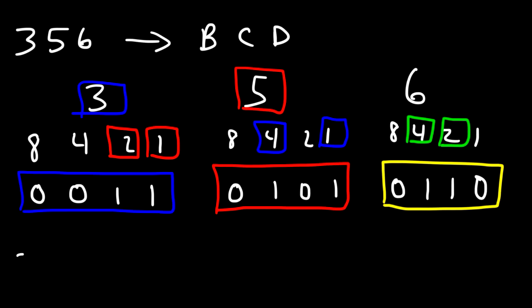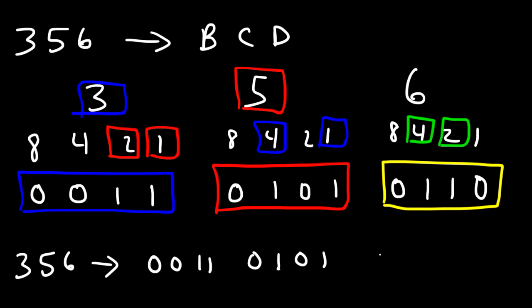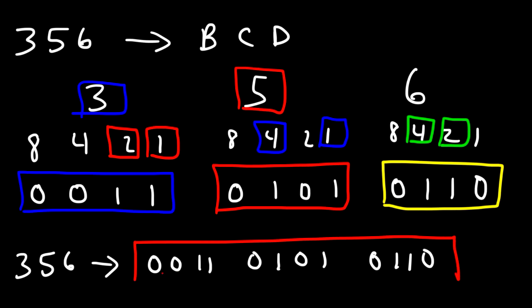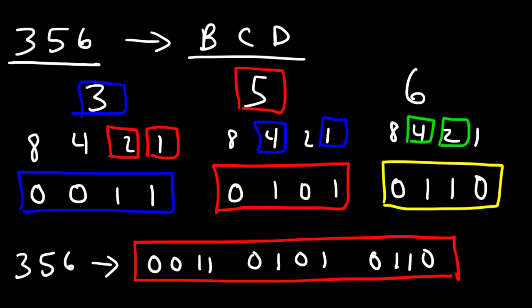And so we could say 356 corresponds to the binary coded decimal 0011 0101 0110. And so this is the answer for this problem. As you can see, it's not too difficult to convert a decimal number into a binary coded decimal.